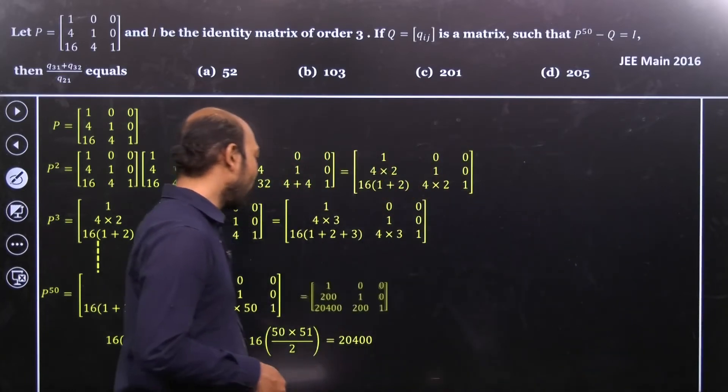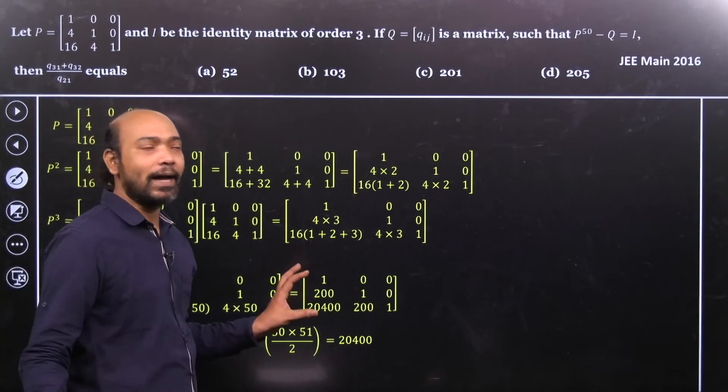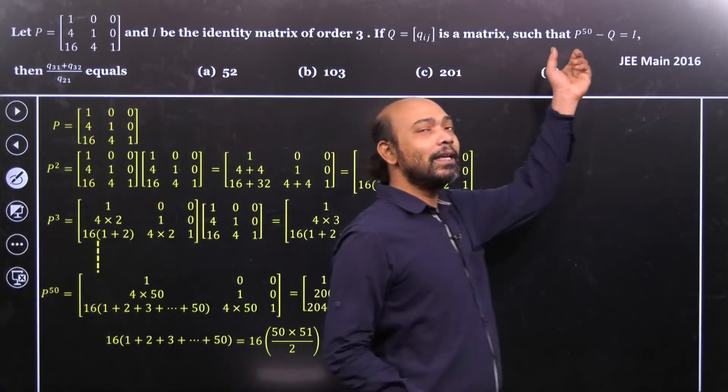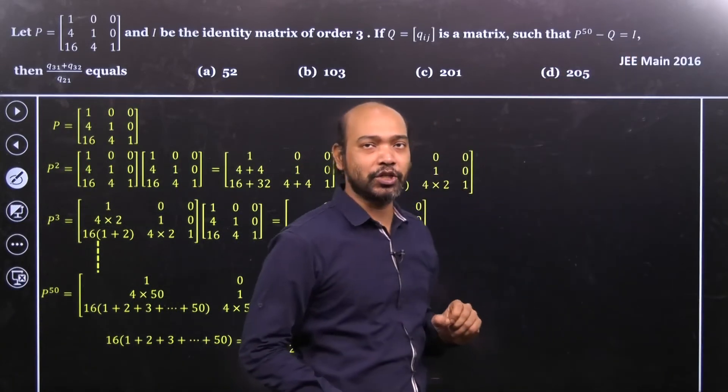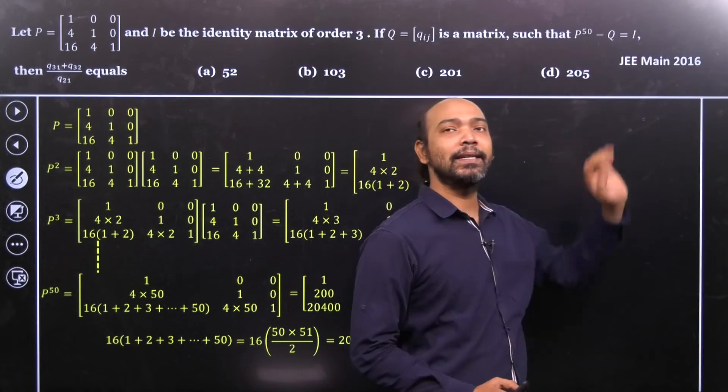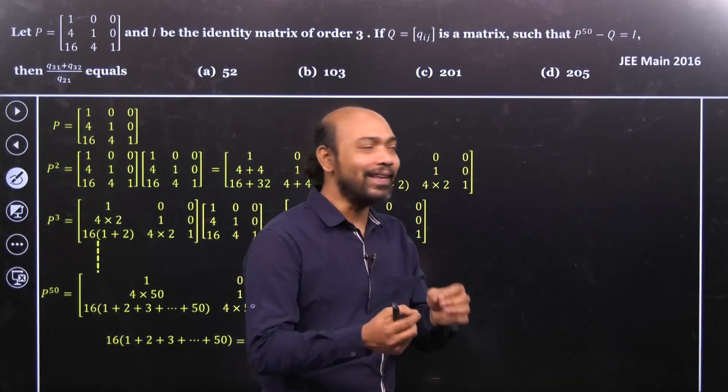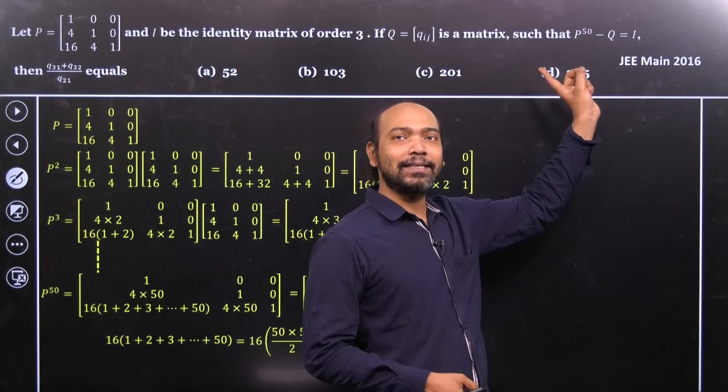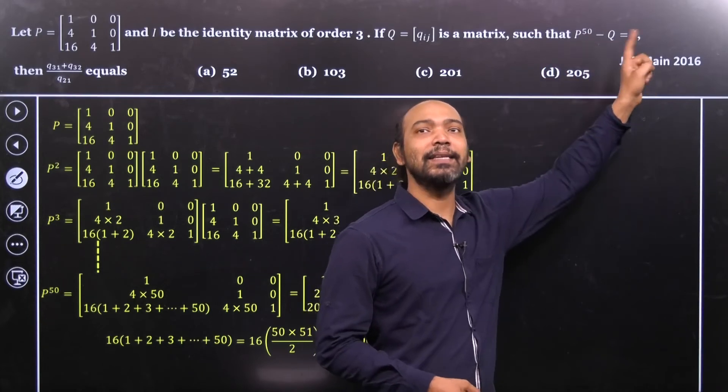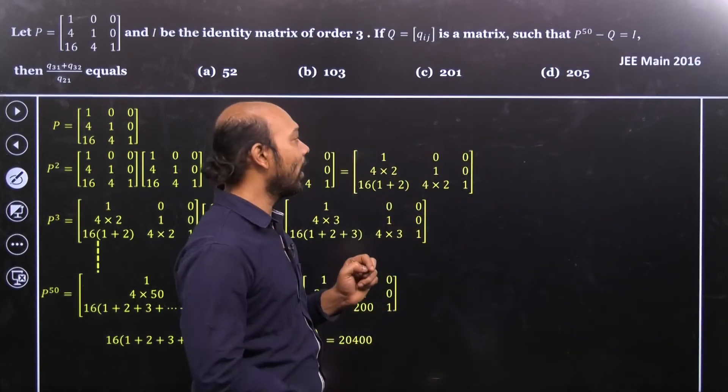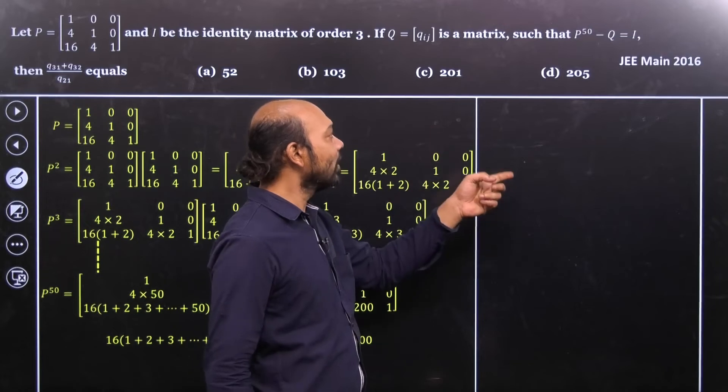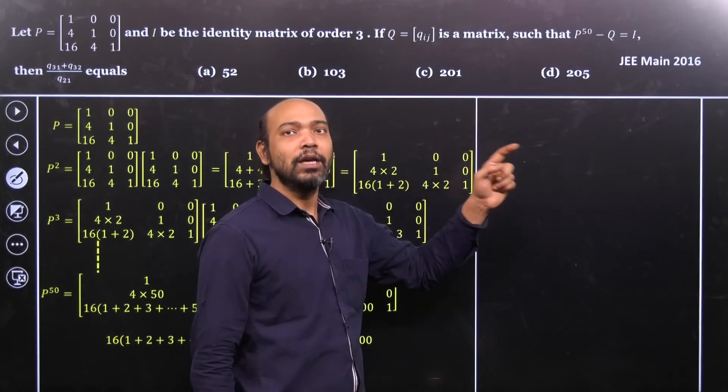So let's write down that P to the power 50 matrix. So we get that. Now see that, here there are given another expression that says P to the power 50 minus Q is equal to I. That means the identity matrix of order 3. Now if I take that I in that side, so P to the power 50 minus I is equal to Q. So let's go ahead. So let's go ahead and calculate that relation.